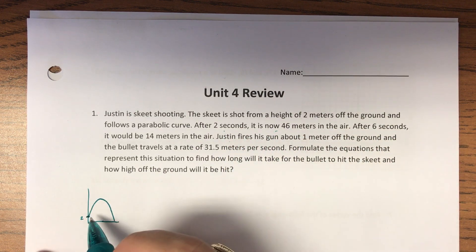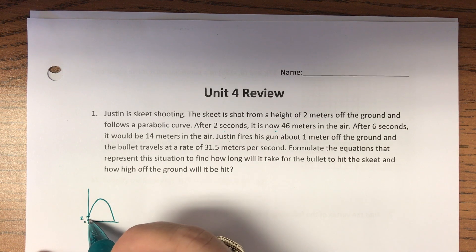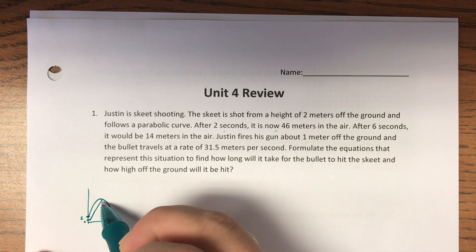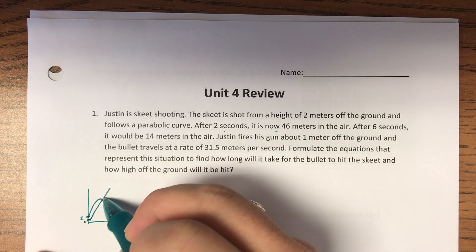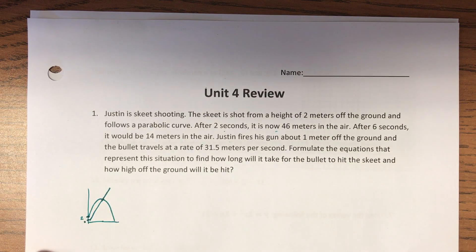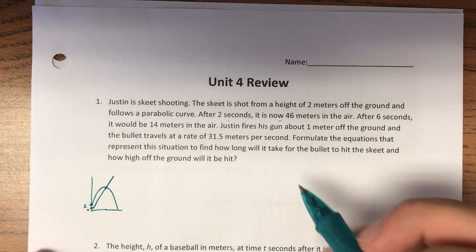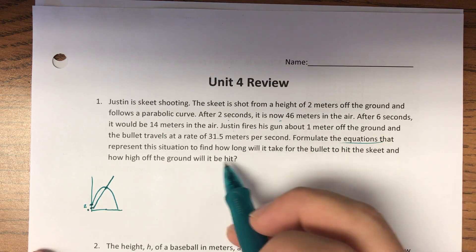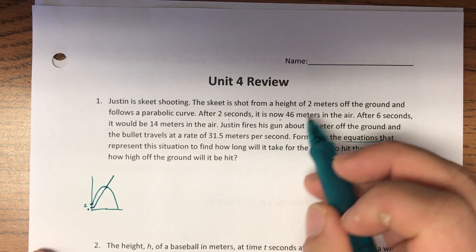He fires his gun about one meter off the ground — that's where his gun fires from — and he tries to hit it at a certain point. We don't know exactly where it's hit, but his bullet is going to fire with a linear function. So we're going to formulate the equations, then we'll also solve this one.